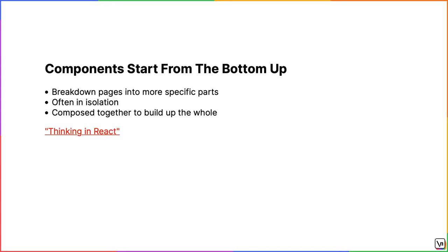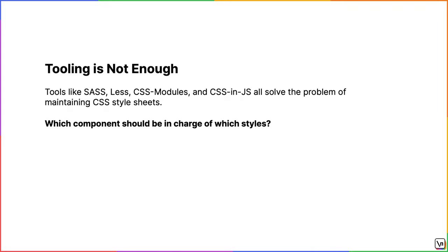The React docs even devote a whole section called 'Thinking in React' that emphasizes this very point. These contradictory methodologies can lead to some frustrating decisions. It can be difficult to compose your apps using lower-level components while still using CSS, which expects you to know what you're building before you've built it. Many tools have been created to help with this problem, like Sass, LESS, CSS modules, and CSS-in-JS. They all help maintain CSS style sheets, but they all fall short on one problem that tooling can never solve: which component should be in charge of which styles. The answer to this question is key to making composition work, especially where web layout is concerned. By the end of this module, you'll know the answer and can start composing layouts in your web app.